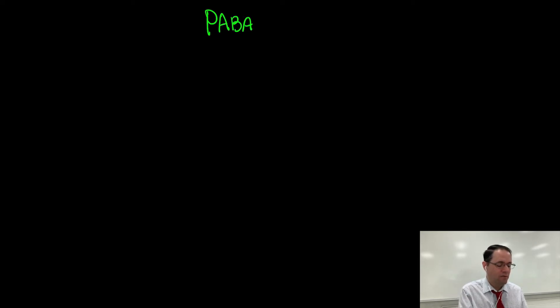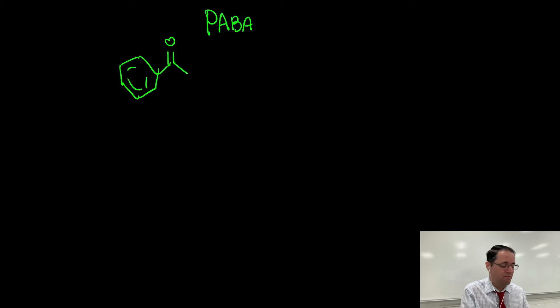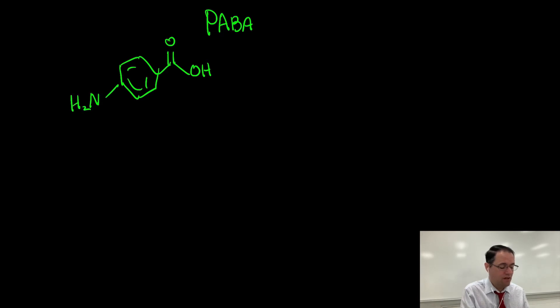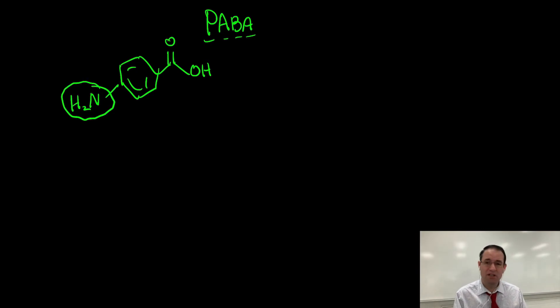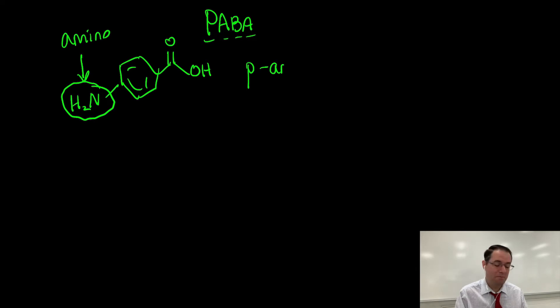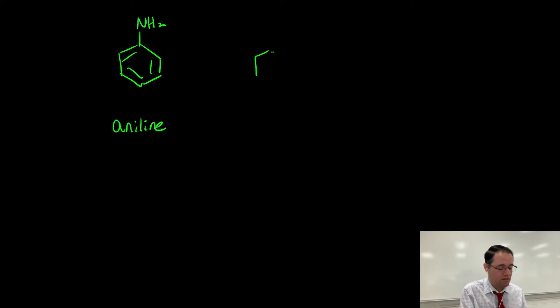We talked about PABA when we talked about aromatic chemistry. This is a component found in sunscreen, and we synthesized it from benzene or toluene. This is also an amino acid — it just happens to be on the aromatic ring. P-A-B-A stands for para-aminobenzoic acid. If you have an NH2 group on an aromatic ring, we call this an aniline.